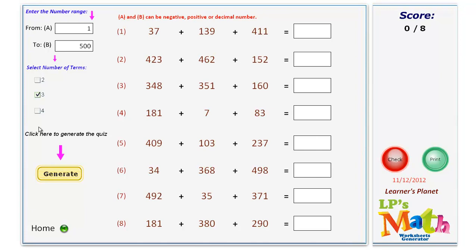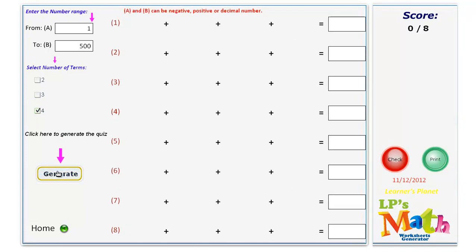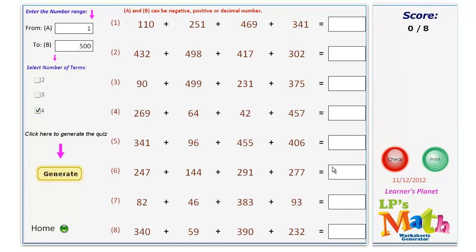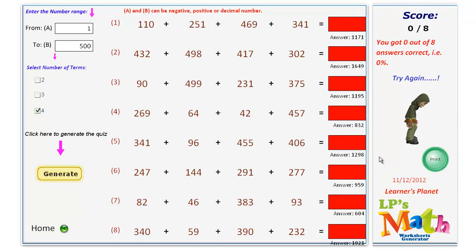You can change the number range. Every time you change the range, you will get a new set of problems. Select the number of terms, say if you have selected 4, you will get 4 term addition.